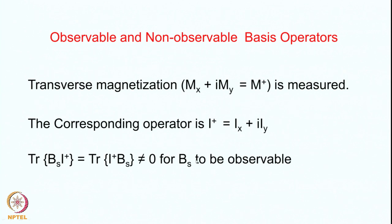Now let us move forward. The next thing is: when you calculate the evolution of the density operator, you will get a mixture of various basis operators adding together in the summation. Depending upon what elements are present in the density operator, when you actually make a measurement some of those appear and some do not. We have to ask which of the various basis operators are observable and which are non-observable. What we measure is the transverse magnetization Mx + iMy, which is M-plus — also called the raising or ladder operator.